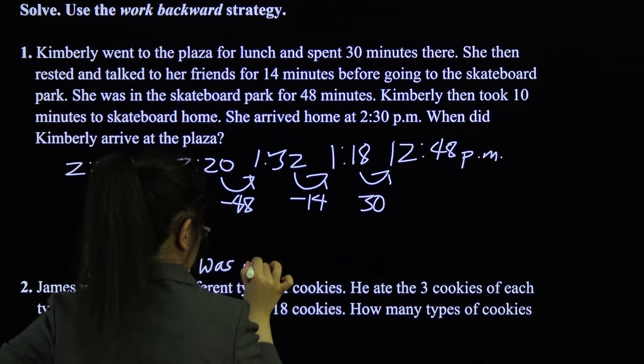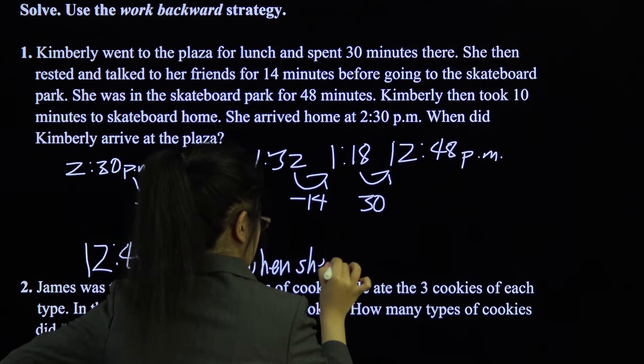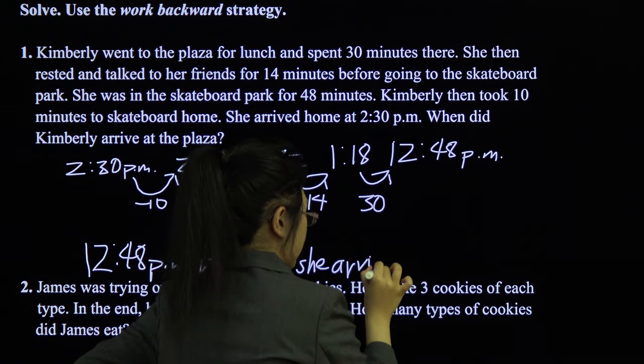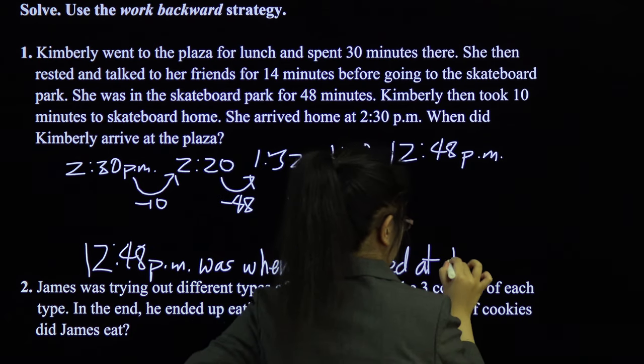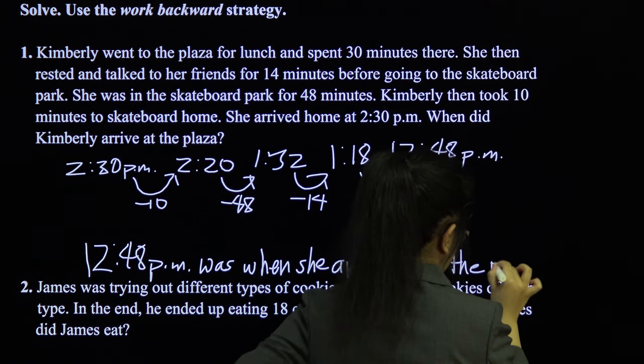We go back another thirty minutes to when she started spending time at the plaza. Which is when she arrived at the plaza. That is twelve forty-eight p.m. We got our answer. If you want to check, then twelve forty-eight, spend thirty minutes, you go to one eighteen. One eighteen, you spend fourteen minutes talking. That's one thirty-two. And then you spend forty-eight minutes at the skateboard park. That's two twenty. And then you take ten minutes, you as in Kimberly, to skateboard home. That's two thirty. She arrives home at two thirty. Two thirty and two thirty match up. So it makes mathematical sense. And your answer is probably correct.